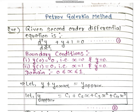In the question, you can see that a second-order differential equation is given: d²y/dx² + y + 1 = 0. We will rename it as equation number 1. Two boundary conditions are given: the first boundary condition is y at x = 0 equals 0, and the second boundary condition is y at x = 1 equals 0.